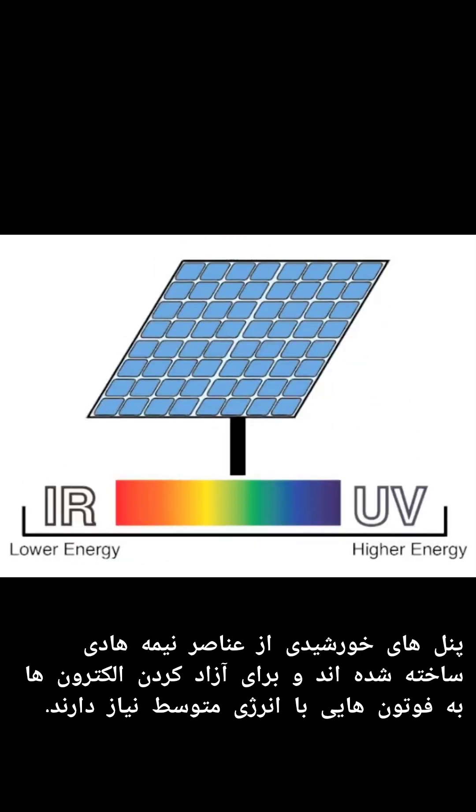Solar panels are made of semi-conducting elements and require photons with a medium amount of energy to free electrons. Currently, solar panels cannot use all photons that are emitted from the sun, but they can use many of them. Scientists are looking for materials that can use more available photons, creating more electricity.